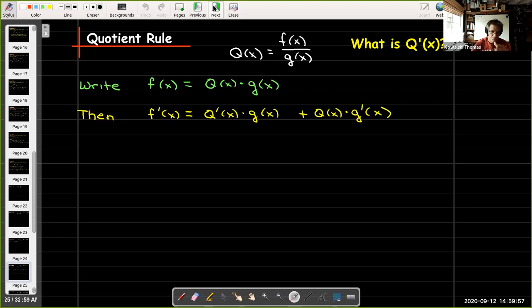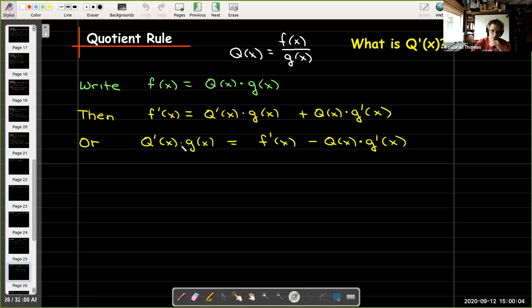So I'll take the derivative of both sides. Since I want to find Q'(x), I'm just going to do some algebra to get Q'(x) on the left hand side. Well, first I have Q'(x) times g(x), but we'll eventually get to just Q'(x).